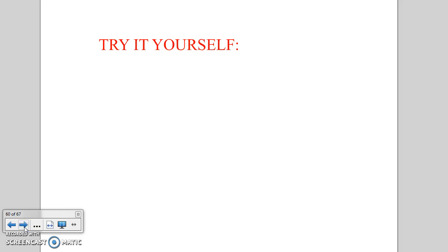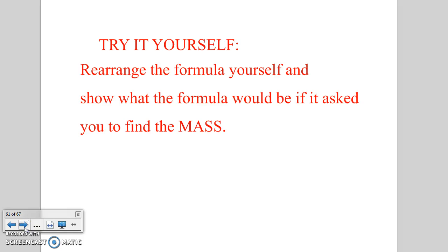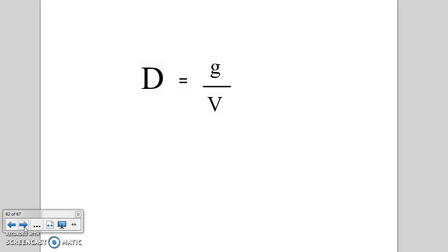Now you can try it yourself. What if a problem was asking you to find the mass? You'd need to isolate the formula to get the g by itself. Starting with the formula we memorized, D equals g divided by V, how would you rearrange that to get the g by itself? Turns out it would look like that: g equals V times D.